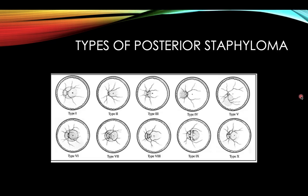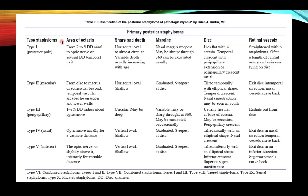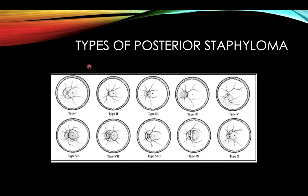There are ten types of posterior staphyloma — the first five are simple and the next five are combined. Type 1 involves the posterior pole, from two to five disc diameters nasal to the optic nerve or several disc diameters temporal to it, covering the entire posterior pole.